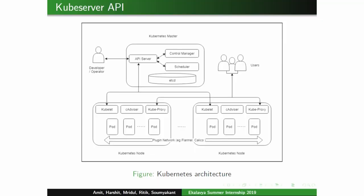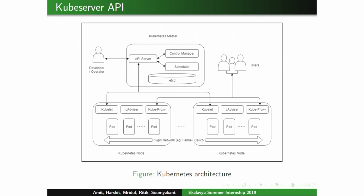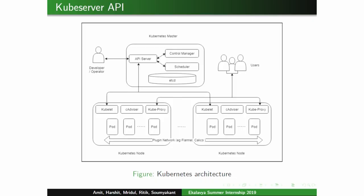The Kube API Server is the gateway to the Kubernetes cluster. Whenever we run a command using kubectl, it passes through the API Server, which performs API management, request processing, and internal control loops. It implements a RESTful API over HTTP and is responsible for storing API objects in a backend storage called etcd. The API server also communicates with the controller manager and scheduler; the scheduler allocates a node to newly created pods, and the controller manager runs controllers like the node controller and replication controller.